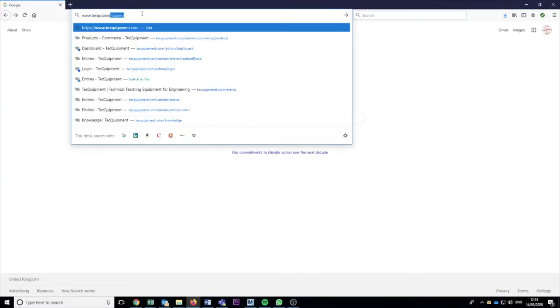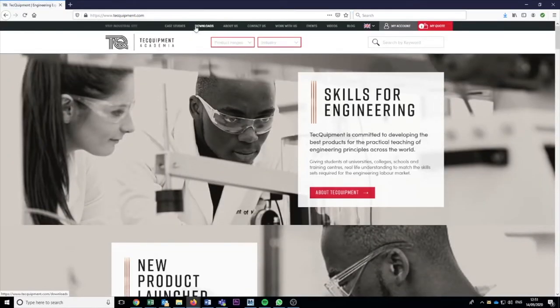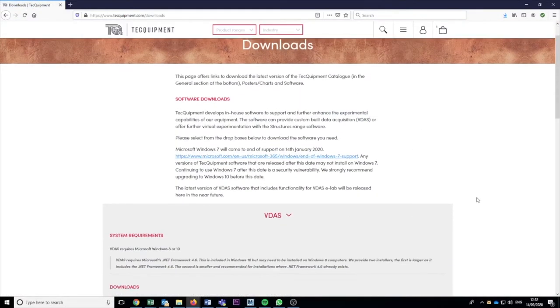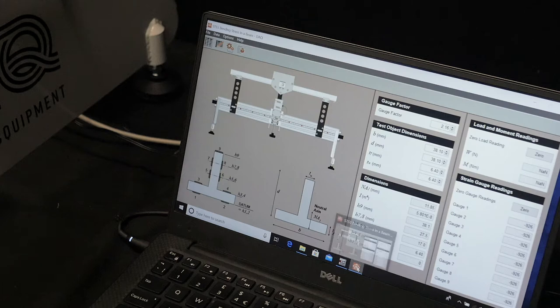The big improvement to the software for the Next Generation Structures range is that it has been integrated into Tech Equipment's main versatile data acquisition system, VDAS, which is available for unlimited free downloads from the Tech Equipment website. As I've already mentioned, there are 21 different experiments. I've got five out of these to show you in this video.